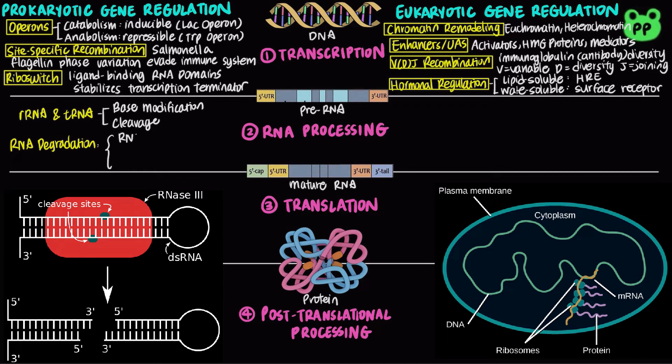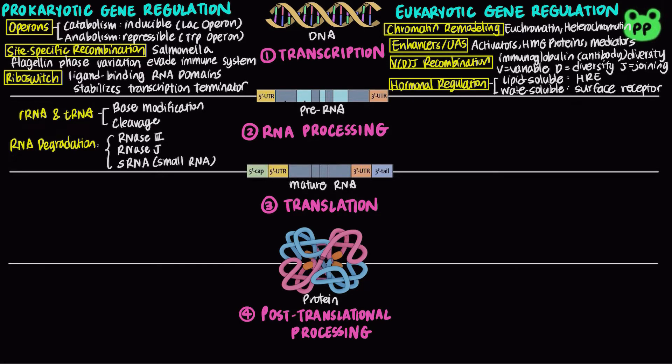Bacterial RNAs are degraded by RNase E, RNase J, and small RNA, abbreviated as sRNA.